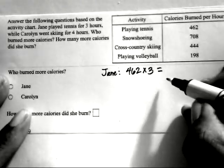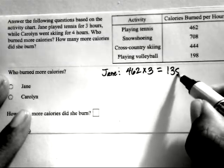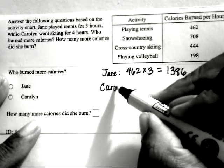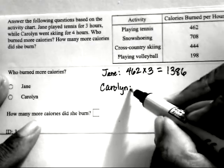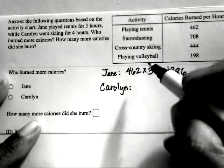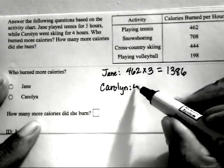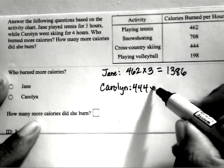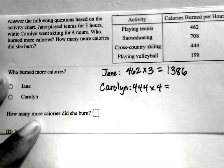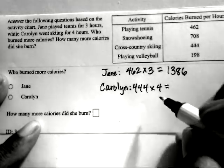So Jane burned 1,386 calories in the 3-hour period. Carolyn, on the other hand, went skiing for 4 hours. So cross-country skiing will be 444 calories in an hour times 4, which will be 1,776.